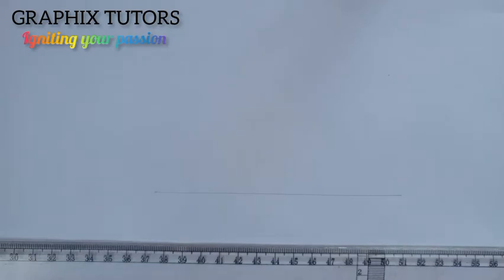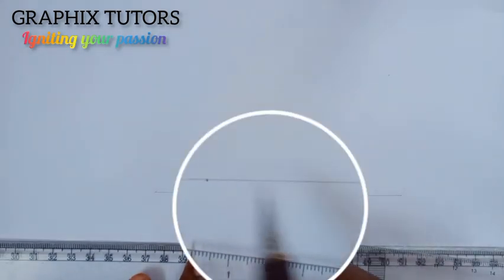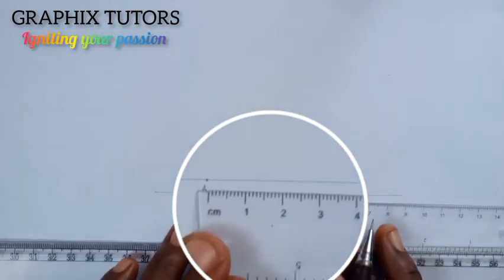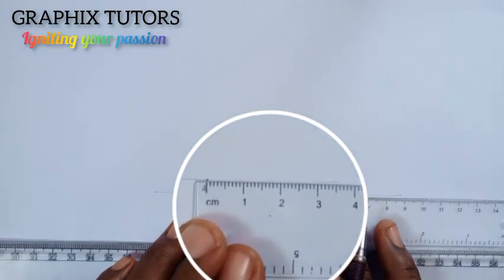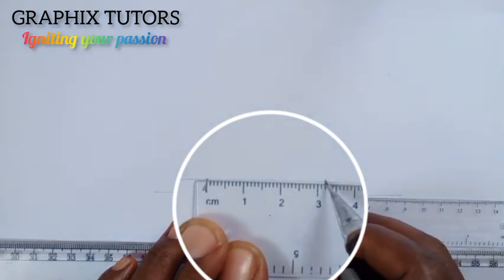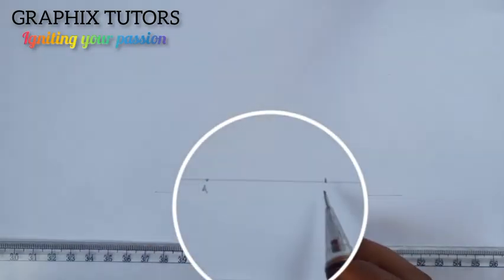Now this is my ruler. I'll pick a point, saying this is point A, and I'll measure 32. So from here to this point here is 32. Now this is my point B.